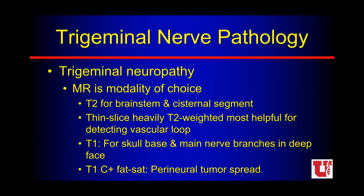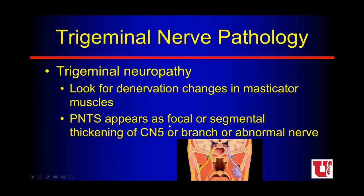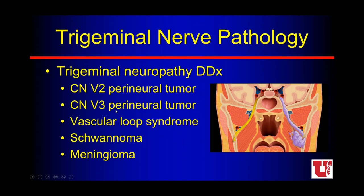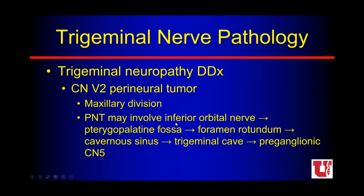For trigeminal neuropathy we look for denervation changes and remember perineural tumor spread — focal or segmental enhancement and thickening of the cranial nerve or a specific branch. Our differential includes V2 perineural tumor spread, V3 perineural tumor spread, vascular loop syndrome, schwannoma, nerve sheath tumors along the nerve, and meningioma. For cranial nerve V2 perineural tumor spread, the tumor may involve any part of the course: from the infraorbital nerve to the pterygopalatine fossa, back through foramen rotundum, to the cavernous sinus, trigeminal cave, and then in any direction — anteriorly along V1, inferiorly along V3, or back into the cisternal segment to touch the pons.